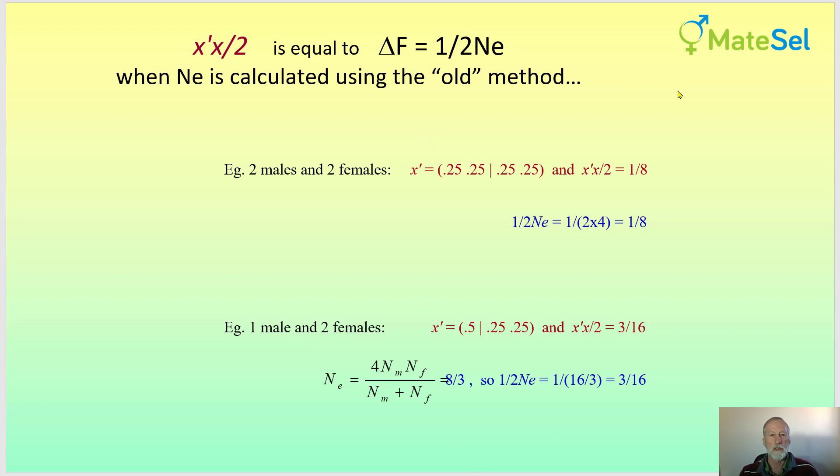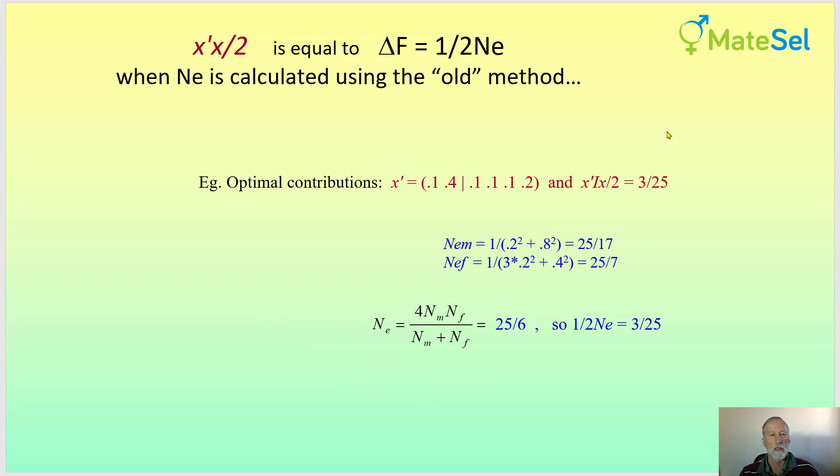There's another one here. So what we want to do, of course, is to spread the contributions in x quite thin, and we get a good result with lower long-term inbreeding rate.